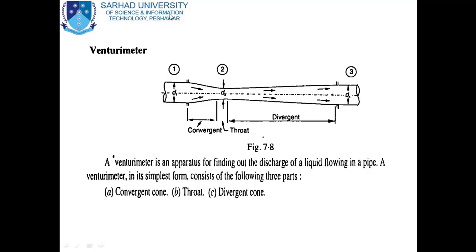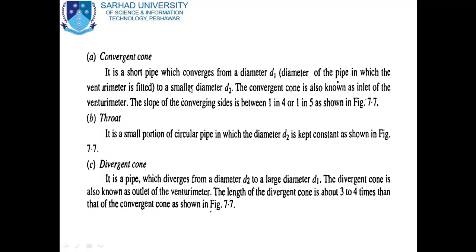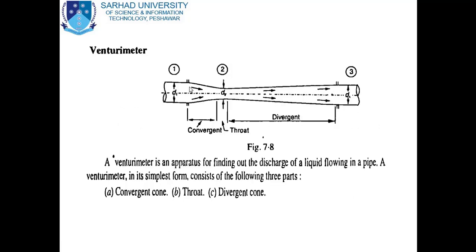The second part is the throat. It is a small portion of circular pipe in which the diameter d2 is kept constant, as shown in figure 7.7. This portion is known as the throat of the Venturimeter.